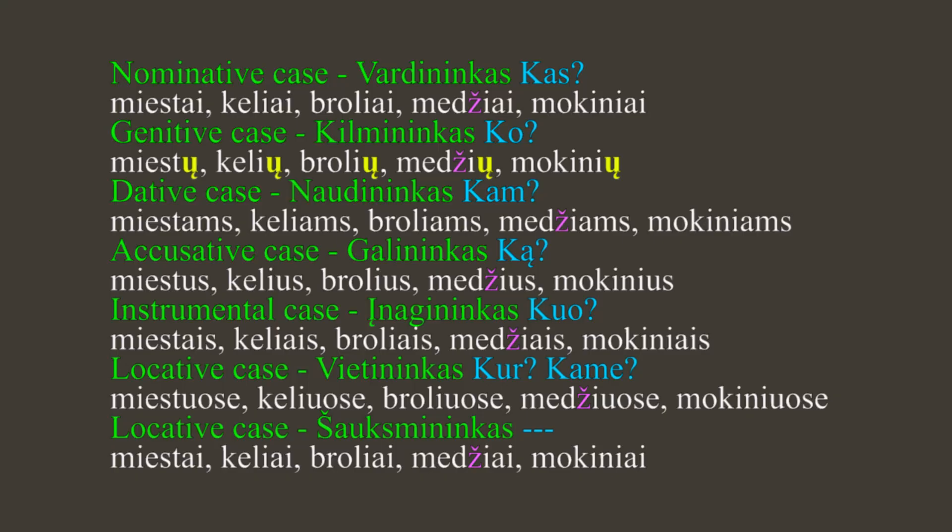Vardininkas — nominative case: miestai, keliai, broliai, medžiai, mokiniai — cities, roads, brothers, trees, and students. As you can see, miestai is a bit different because it doesn't have an 'i' after 't', so it's miestai, while the other ones are soft: keliai, broliai, mokiniai, medžiai.